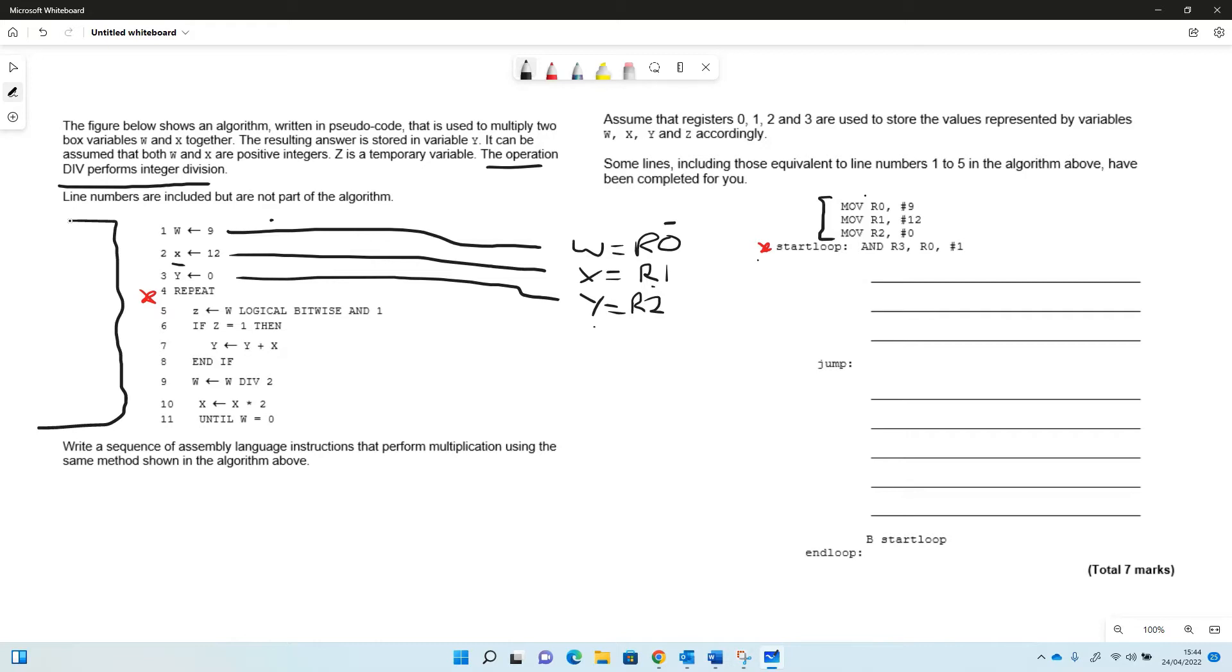So then we've got start loop, which is same as I'll repeat here. They've put the AND statement in for us because we want to do z takes the value of w logical bitwise AND one. So w is r naught, one there. We're ANDing r naught and one, and we're putting the result into register three. So register three will then hold that value.